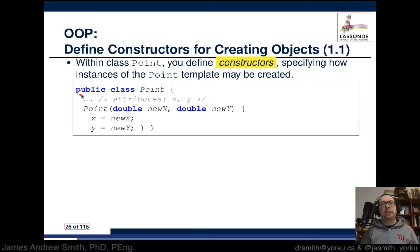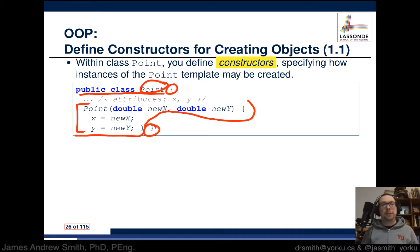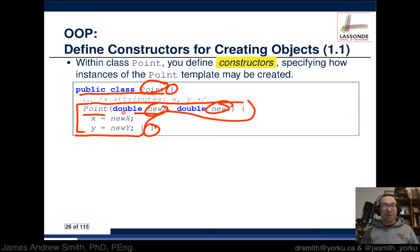Here's an example. We write out the class — it's public, we give it a name, open and close curly braces. Inside of that, we have the constructor, which has the class name and input arguments: two double precision floating point values, new X and new Y. When the object is created through this constructor, we take those input arguments and create X and Y as variables within the object that came from the class.